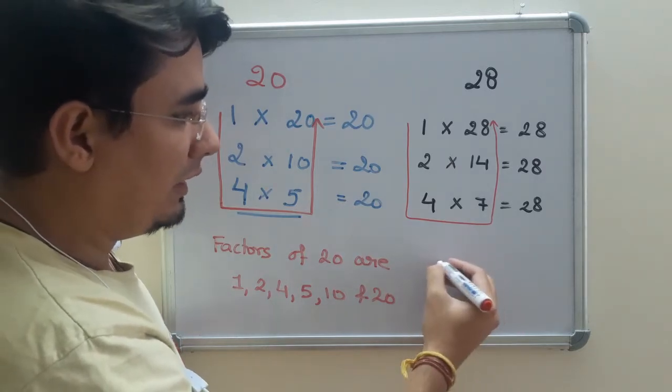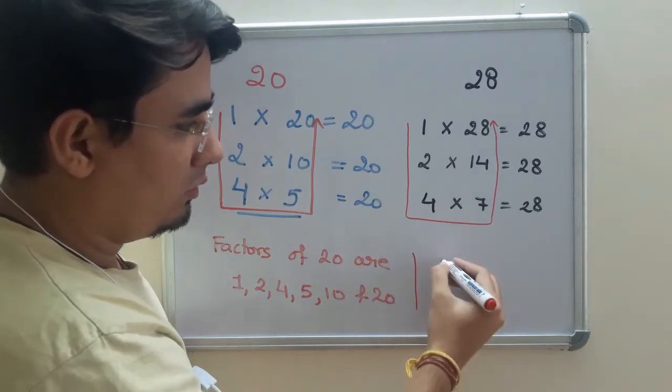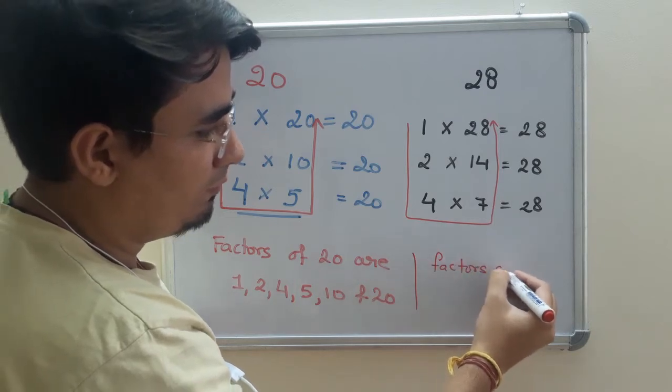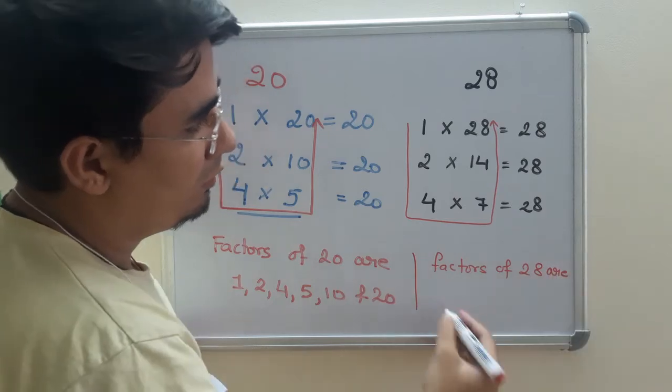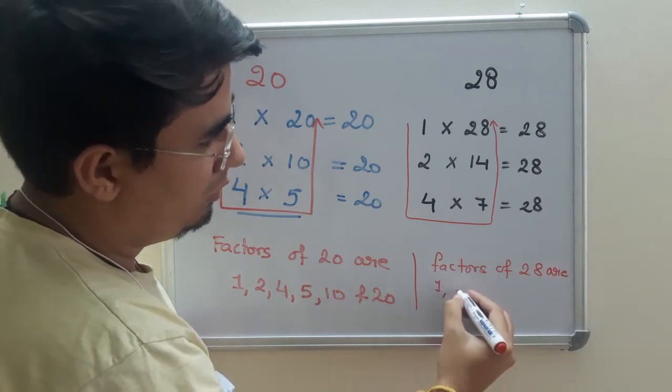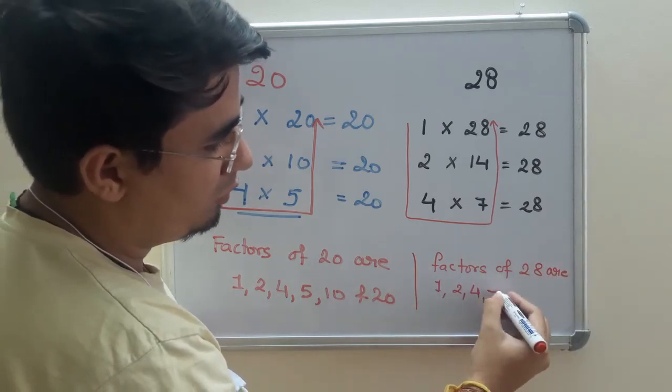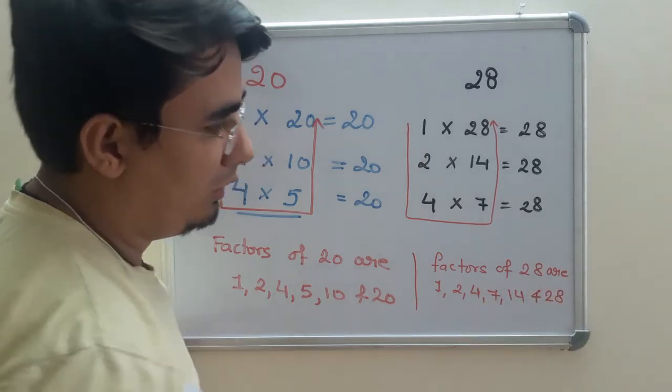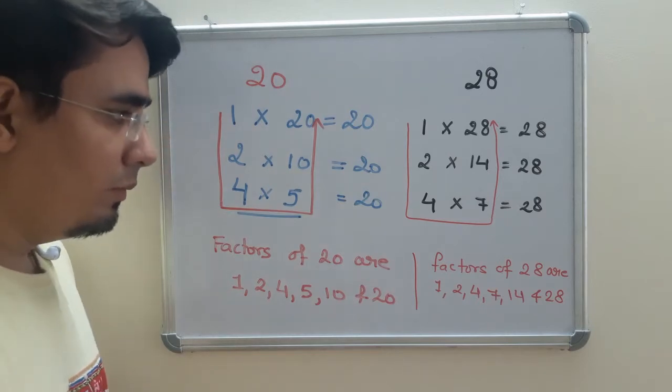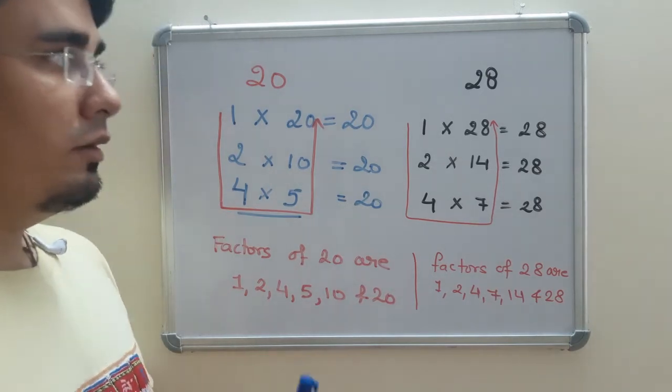So we can again write. Factors of 28 are 1, 2, 4, 7, 14, and 28. So this is how we can find factors.